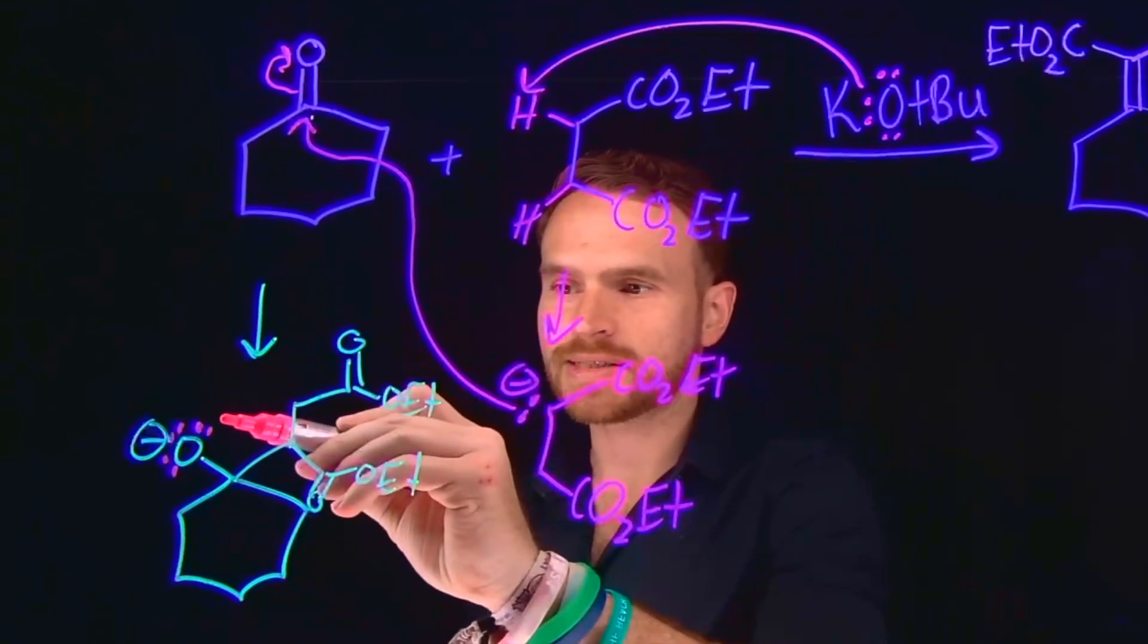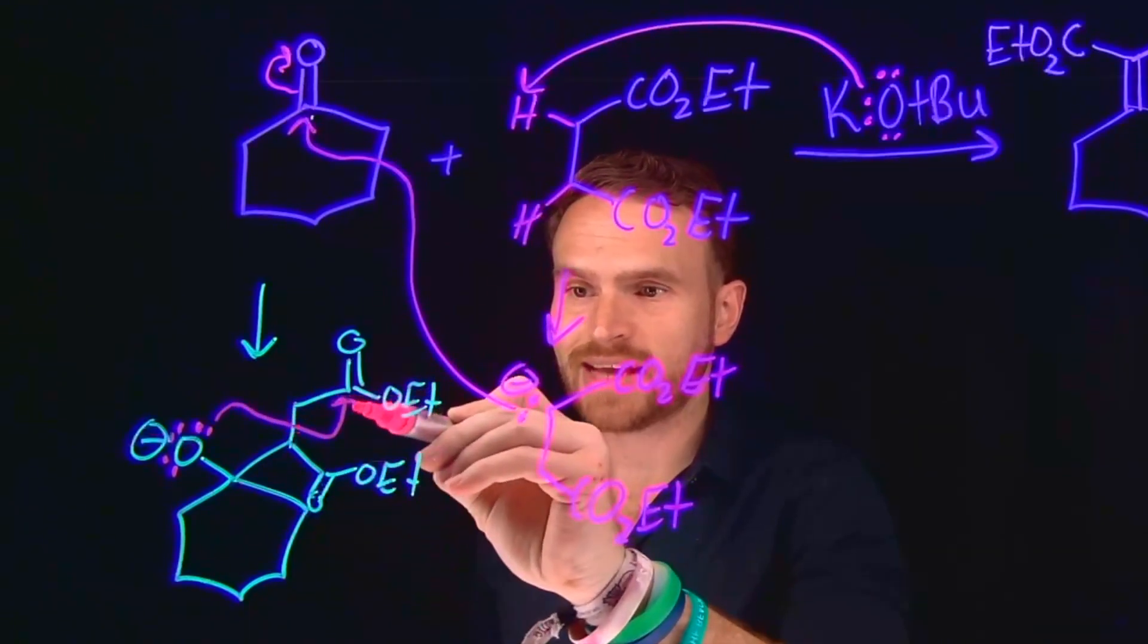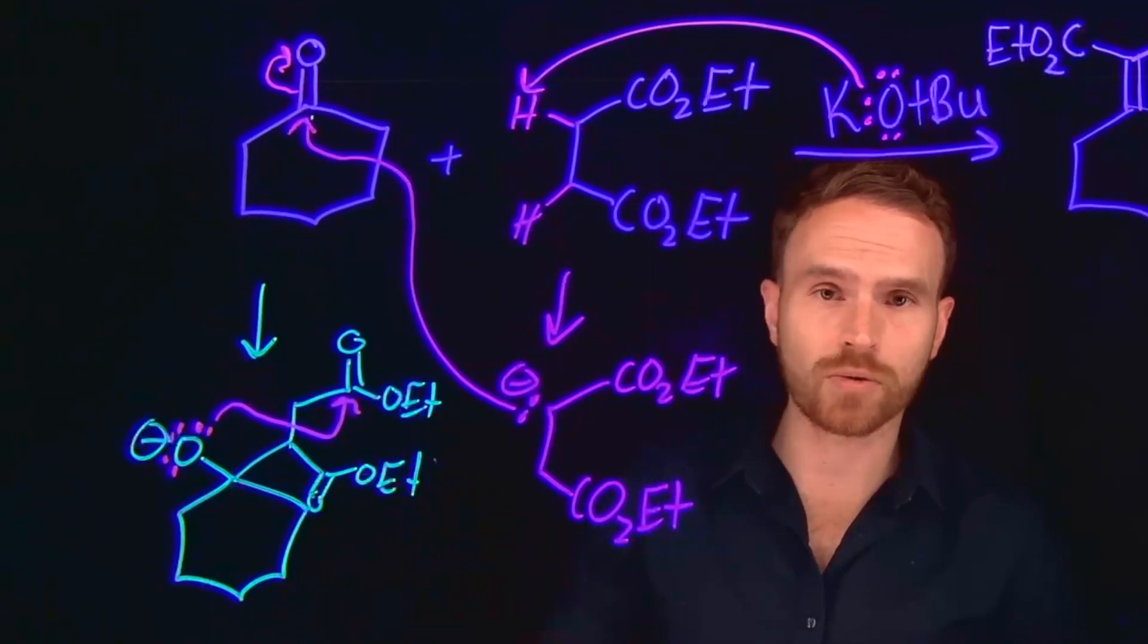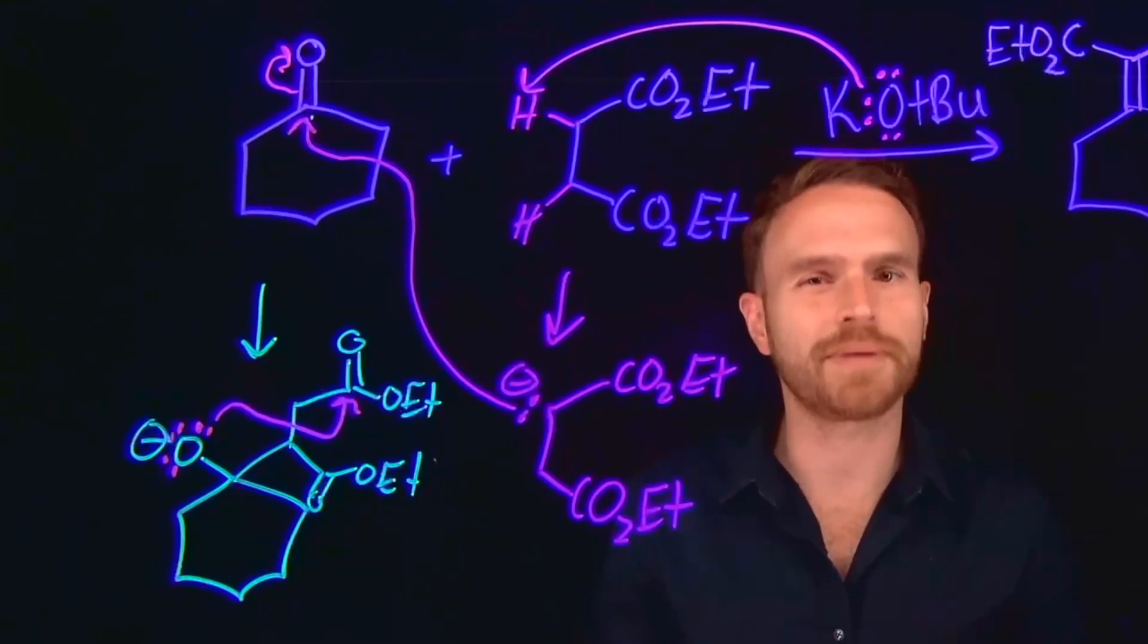What will happen is that this will come and attack this ester, which allows us to form a five-membered ring. This is going to be the more likely position that it would attack as opposed to this carbon, which would form a four-membered ring, which is going to be more strained.